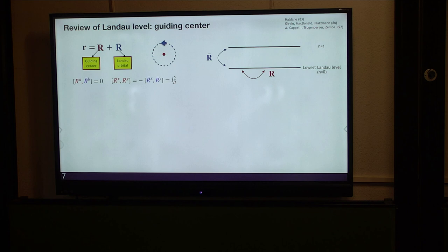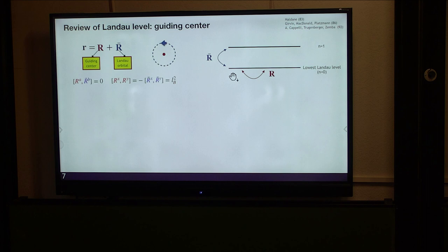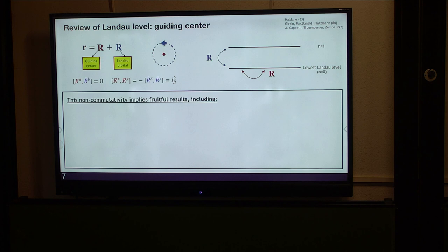An important ingredient of the Landau level is the non-commutative algebra. The electron coordinates factorize into the classical center, called the guiding center, and the radius called the Landau orbital. As quantum operators, these two sets of coordinates commute with each other, but individually they are non-commutative. This non-commutativity is perhaps one of the most important algebraic structures in Landau levels. The guiding center and Landau orbital operators can be used to construct ladder operators corresponding to magnetic translations within a Landau level and inter-Landau level transitions.